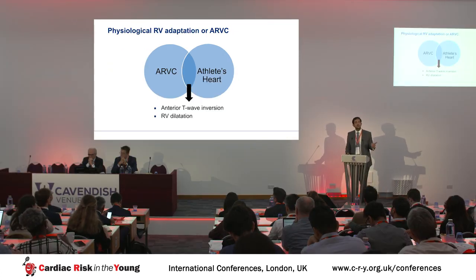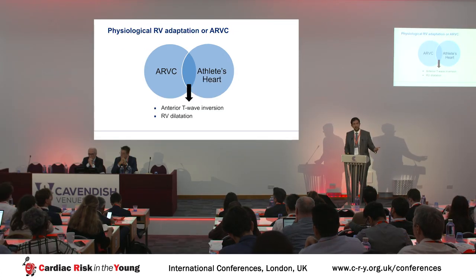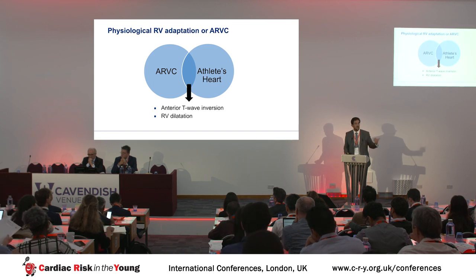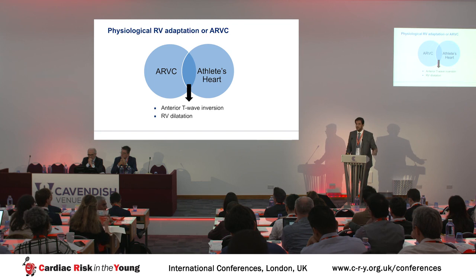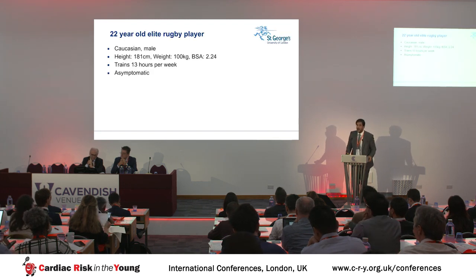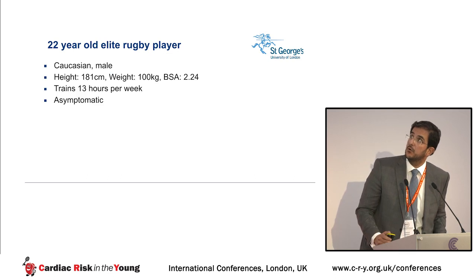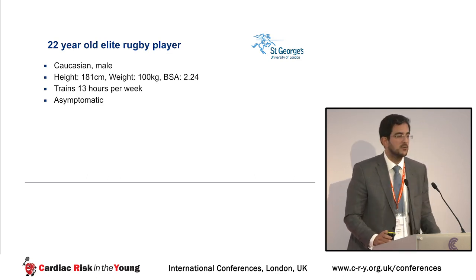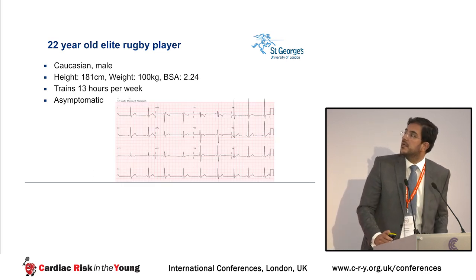Commonly in the context of screening, you will have anterior T-wave inversions, you will proceed to further investigations, and then you'll find right ventricular dilatation — and then you're in a bit of trouble. I'll present this through a case: a 20-year-old Caucasian rugby player who trains 13 hours a week. This is his 12-lead ECG — he attended one of the CRY screenings.